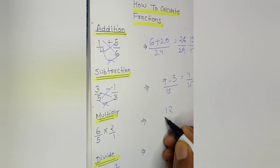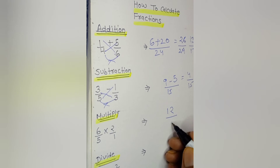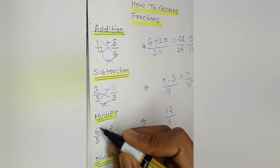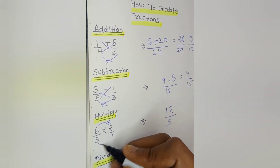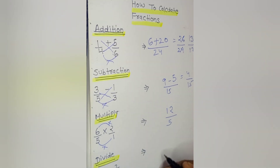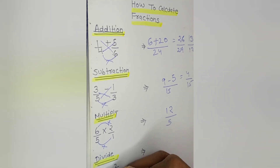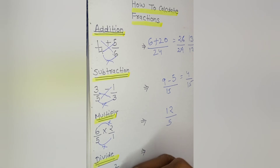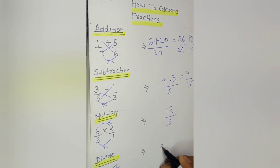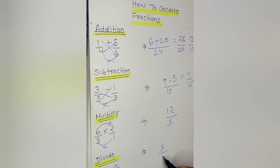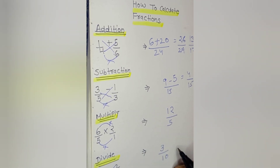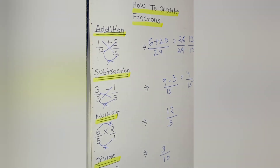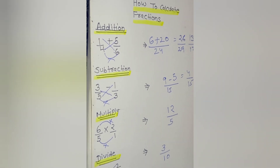Now multiply: 6 into 2 is equal to 12 upon 5, and 5 into 1 is equal to 5. Now let's see division: 1 upon 5 divided by 2 upon 3. So 3 into 1 is equal to 3, upon 5 into 2 is equal to 10. So the answer here is 3 by 10.